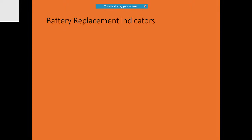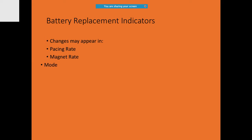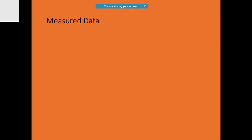Also, at what rate was pacing being done and at what output. So how do you distinguish about the replacement indicator — when do you think it can be replaced? You can know by the pacing rate, by seeing the mode, the magnetic rate, and you can also see the pulse width or use data obtained through telemetry.